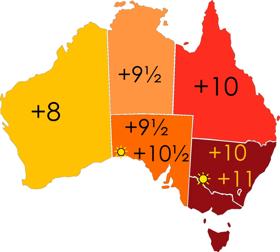Western Australia has also had a particularly involved debate over DST, with the issue put to a referendum four times: in 1975, 1984, 1992, and 2009. All proposals to adopt DST were defeated. Voters registered a negative vote of 54.6% in the 2009 referendum, the highest percentage across all four referendums. Each referendum followed a trial period during which the state observed DST. The first three followed a one-year trial, while the 2006 Western Australian Daylight Saving Bill 2006 instituted a trial of DST beginning on 3 December 2006 and lasting for three years.